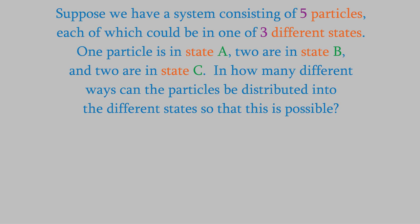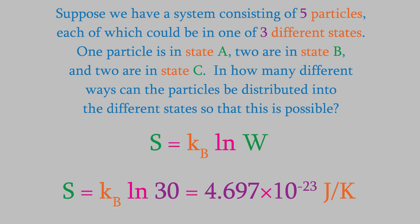Earlier, we saw that when one particle is in state A and two particles are in each of states B and C, we got a value of 30 for W. Plugging that into our formula for the entropy, we find that the entropy of this system is 4.697 × 10⁻²³ joules per kelvin.